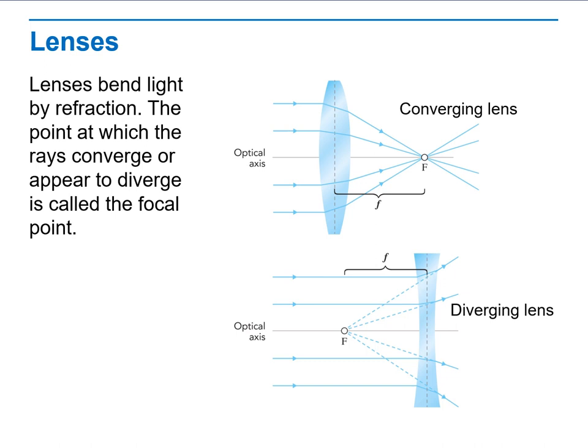Which type of lens is shaped so that all parallel lines appear to diverge away from a single point on the same side of the lens as the entering rays? Yeah, this is a diverging lens.